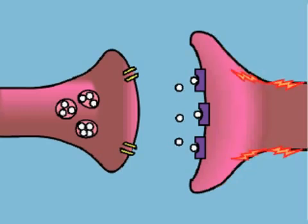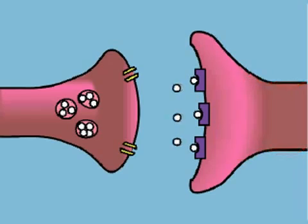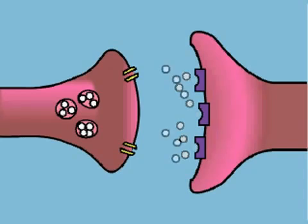That electrical signal then moves toward the cell body of the postsynaptic neuron. Now that the neurotransmitter has relayed its message, it releases from the receptor into the synaptic space.